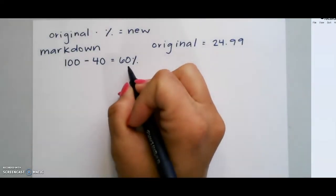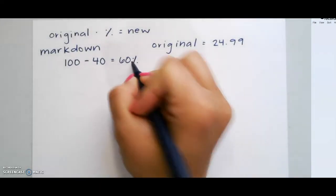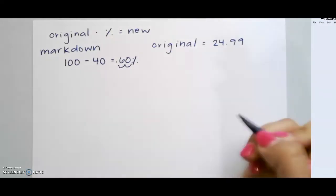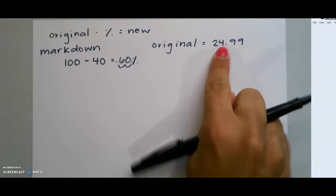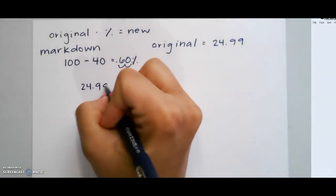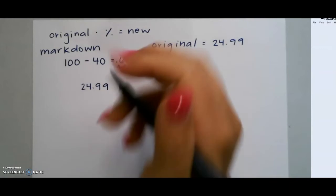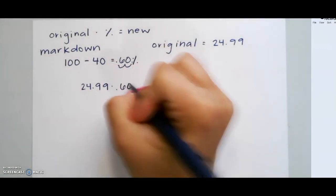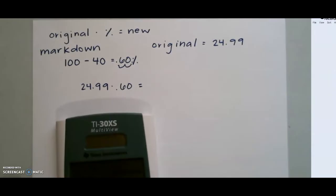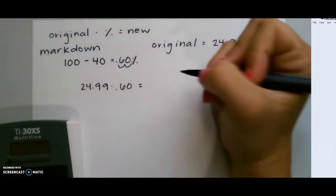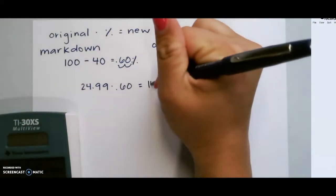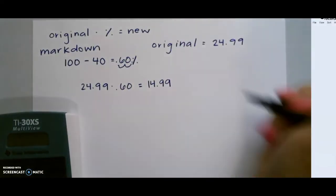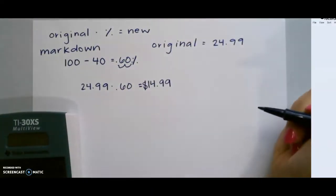Now we must change this to a decimal by moving our decimal two places to the left or dividing by 100, and then we multiply that percentage times our original price. So our percent now is 60%, and that will give us our new price. So we do 24.99 times .60, and that gives us 14.99 hundredths. So our new price would be $14.99.